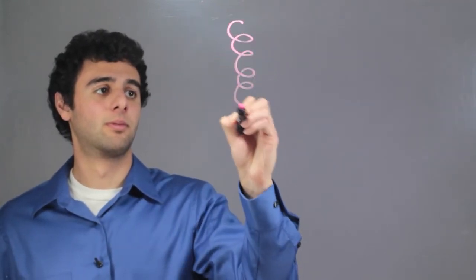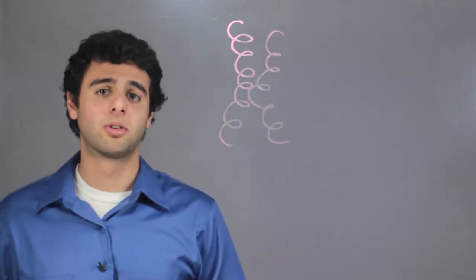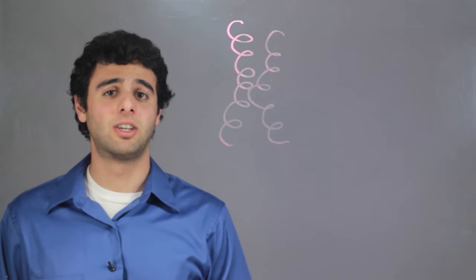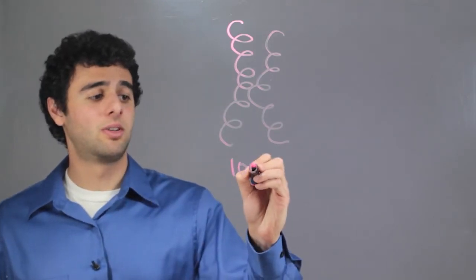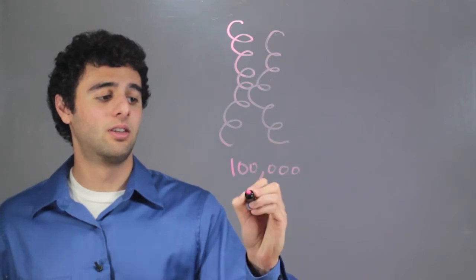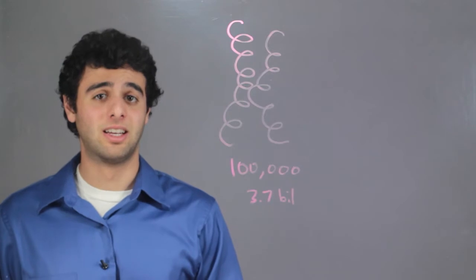First, I want to start off with a chromosome. As we know, chromosomes are composed of genes, which are composed of nucleotides. We're talking anywhere between 100,000 to 3.7 billion nucleotides in each chromosome.